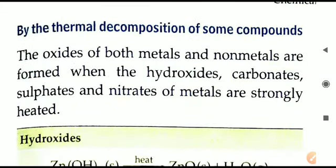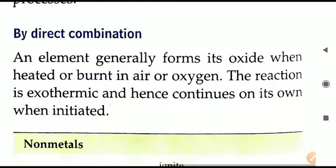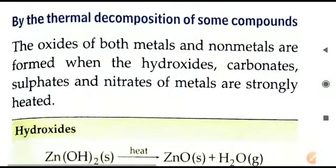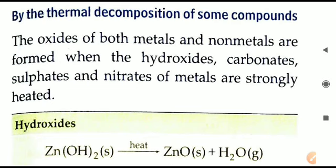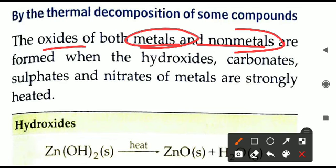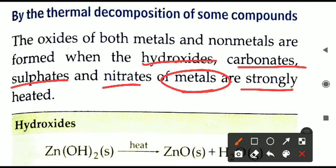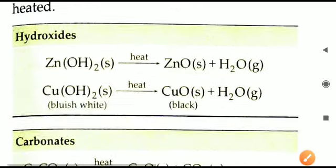The second method of preparation of oxides is by thermal decomposition — this is a decomposition reaction. We will heat a particular compound and it will break down into various substances, one of which will be an oxide. Oxides of both metals and non-metals can be formed when the hydroxide, carbonate, sulfate, and nitrate of metals are heated strongly.